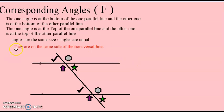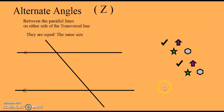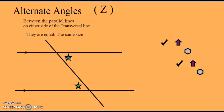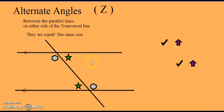I just want to highlight that they are on the same side of the transverse line — at the top of the parallel lines, on top of both parallel lines, but on the same side of the transverse line. Now let's see how many alternate angles you can find — remember we look for the letter Z. They must be between the parallel lines and on either side of the transverse line. That angle and that angle are equal — they are alternate angles. And this angle and that angle are also equal alternate angles.